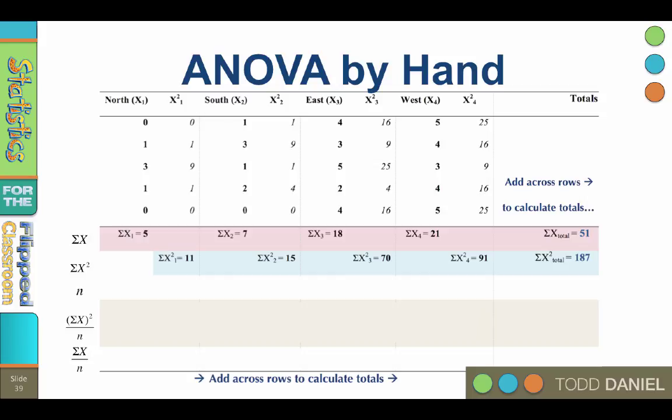I may be going a little quickly through this example, knowing that you can pause at any point. We will need the n for each group. Each of the groups comprised five munchkins, so of course the total of those four groups would be 20.